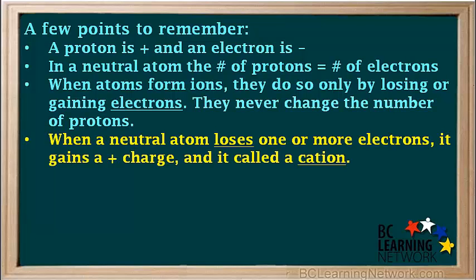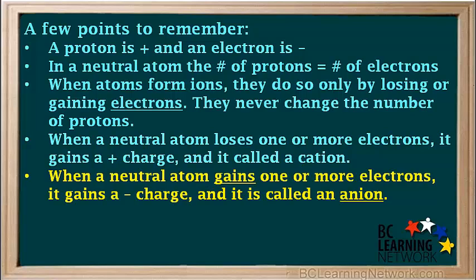When a neutral atom loses one or more electrons, it gains a positive charge, and it's called a cation. When a neutral atom gains one or more electrons, it gains a negative charge, and it is called an anion.